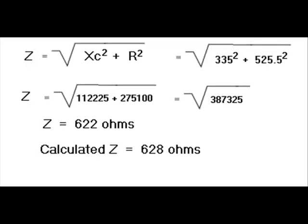Here I have taken my calculated resistances that I could not add directly. And again, using the Pythagorean theorem, I come out with a Z of 622 ohms. Pretty darn close to the 628 that I had calculated earlier.